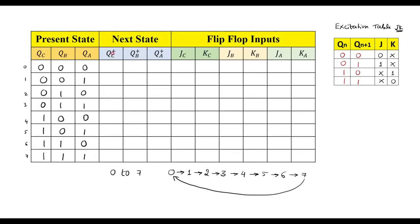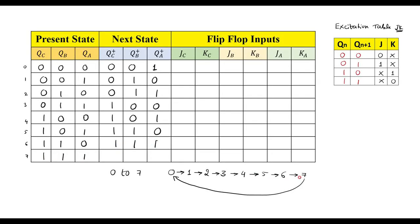Now let me write the next states. If present state is 0, next state is 1 (binary 001). From 1 the next state is 2 (010). From 2 the next state is 3 (011). From 3 the next state is 4 (100). From 4 the next state is 5 (101). From 5 the next state is 6 (110). Present state 6, next state is 7 (111). Present state 7, next state is 0 (000).